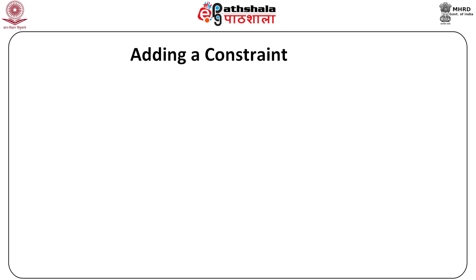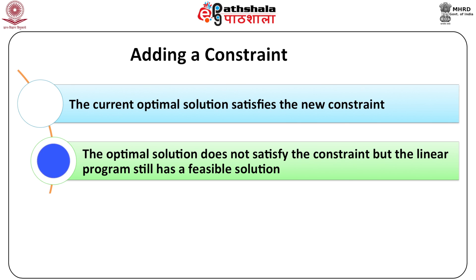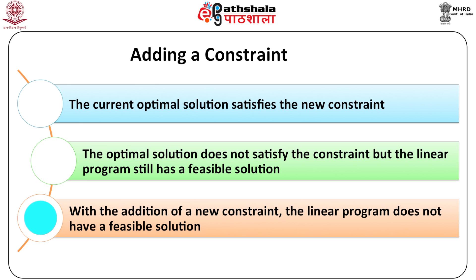Adding a constraint. If a new constraint is added to a problem, there can be three possibilities. One, the current optimal solution satisfies the new constraint. Second, the optimal solution does not satisfy the constraint but the linear program still has a feasible solution. Third, with the addition of a new constraint, the linear program does not have a feasible solution. There is a need to identify and deal with these kinds of changes. Let us take an example to study all three possibilities.